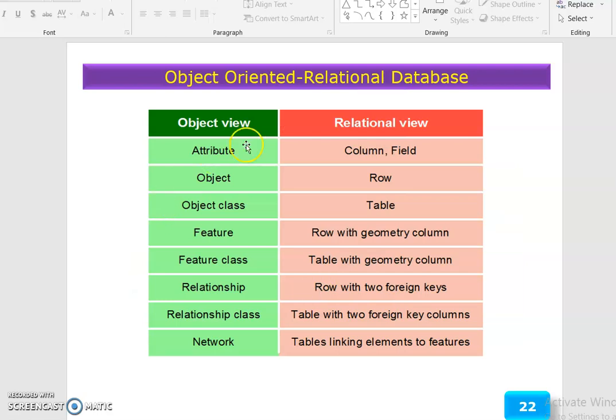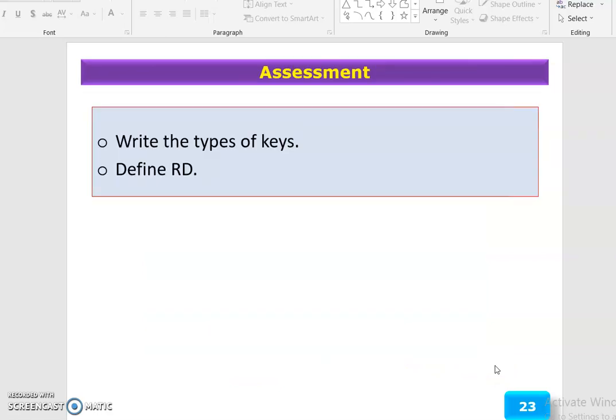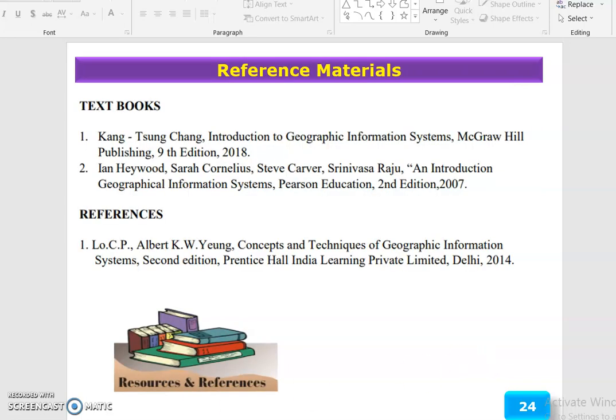Mapping between views: Attribute corresponds to column and field. Object corresponds to row. Object class is a table. Feature is a row with geometry column. Feature class is a table with geometry column. Relationship is a row with two foreign keys. Relationship class is a table with two foreign key columns. Network tables link elements to features. The assessment for this session: write the types of keys. Thank you.